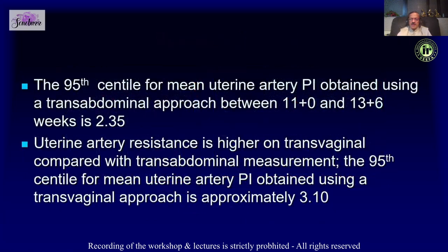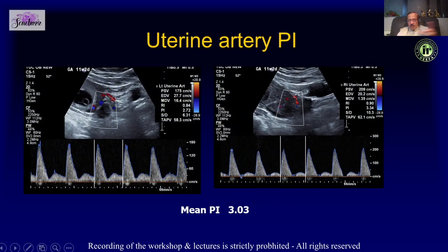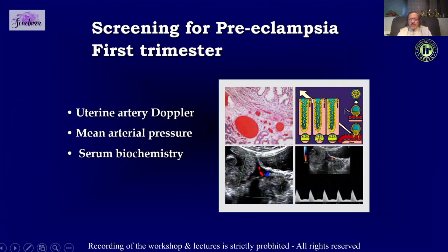There can be a little difference when using a transvaginal approach. Here is an example of a transabdominal scan where the mean PI is high at 3.0 at 11 weeks 2 days — this patient later developed preeclampsia.